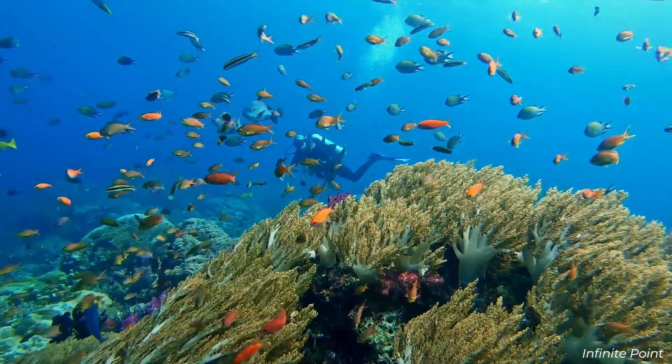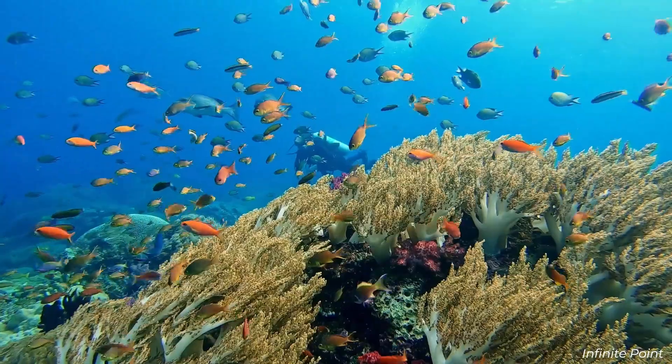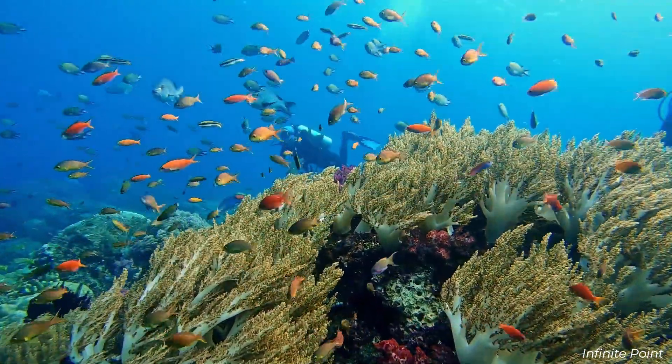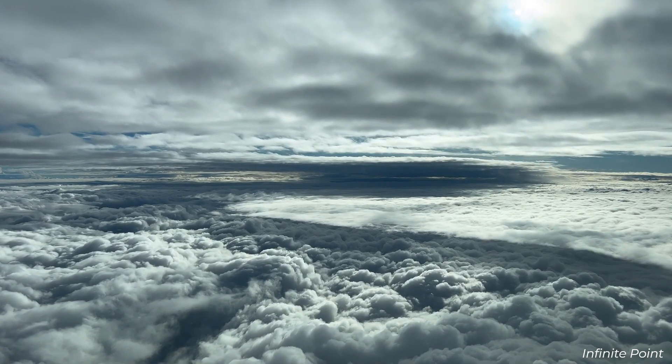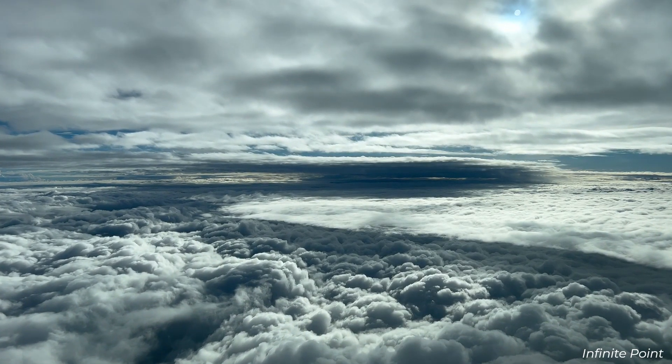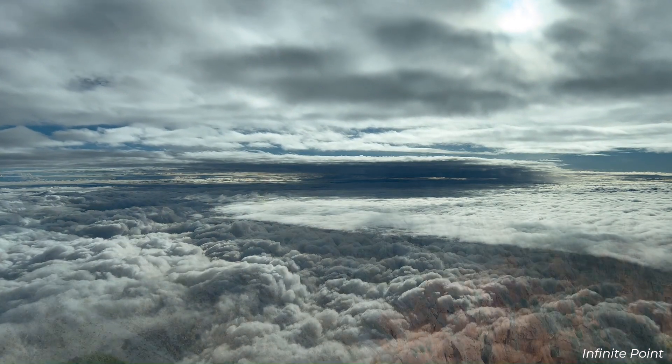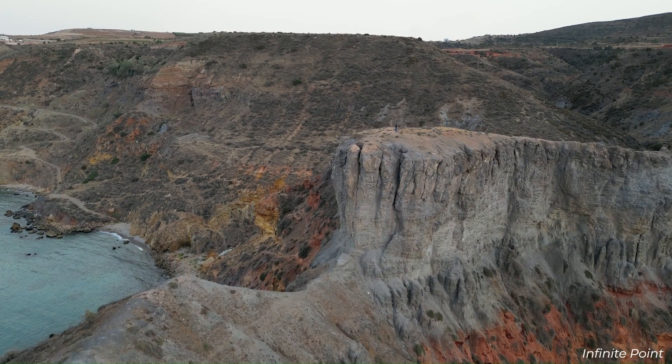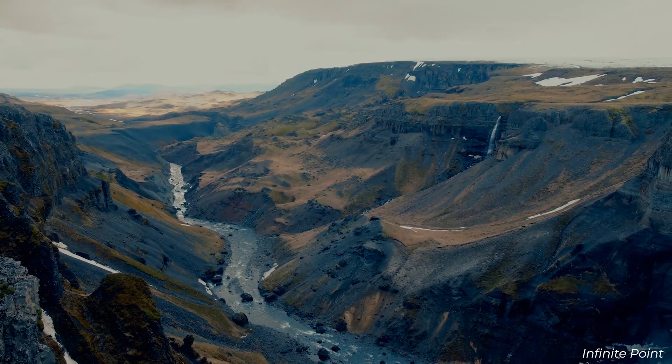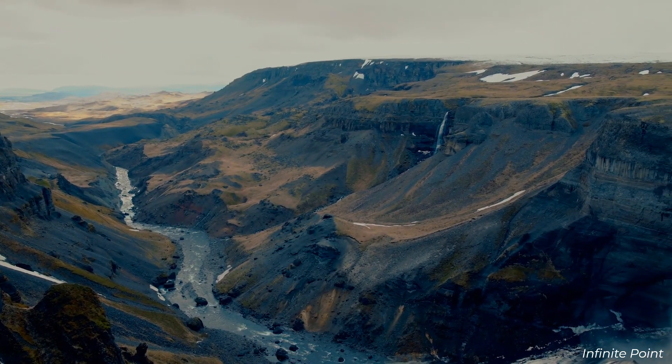The evolution of life also had profound effects on the planet itself. Biological processes influenced the composition of the atmosphere, the chemistry of the oceans, and even the structure of the Earth's crust. Life and the planet have been inextricably linked, shaping each other over billions of years.